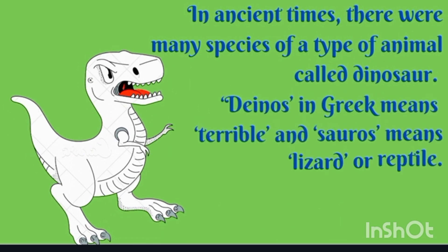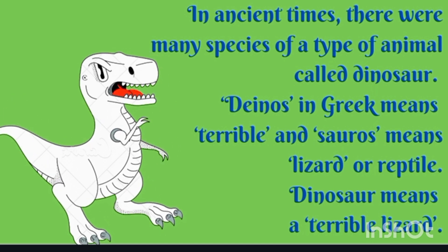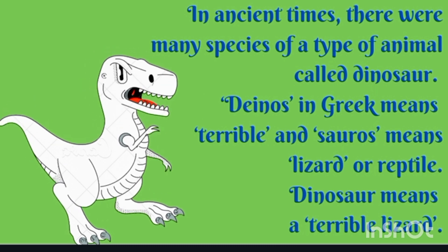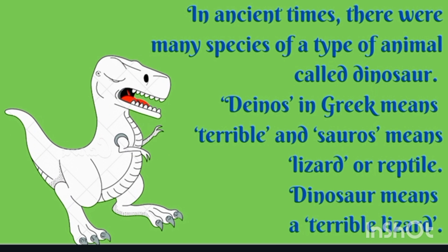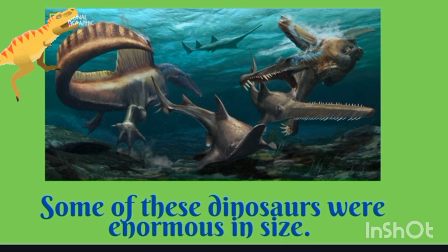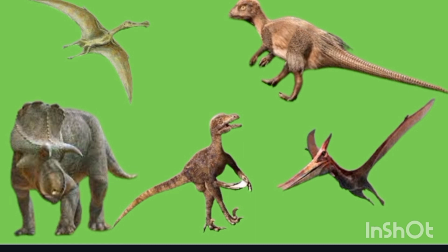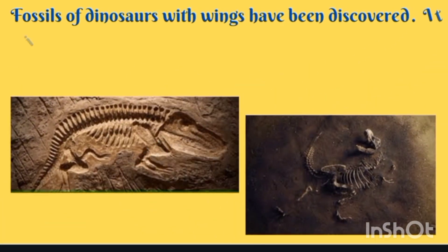In ancient times, there were many species of animals called dinosaurs. In Greek, 'dinos' means terrible and 'seros' means lizard or reptile — so dinosaur means a terrible lizard. Some of these dinosaurs were enormous, found in water, flying in the air, and some were animal-eating or plant-eating. A question that comes to every student's mind is: how did scientists discover about dinosaurs when they are not alive? It was because of the fossils found in different parts of the world.